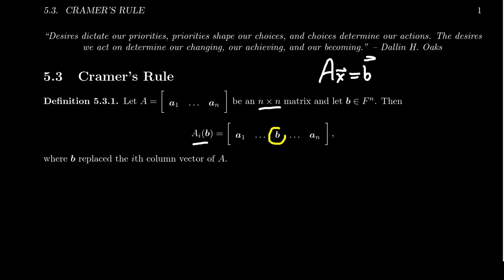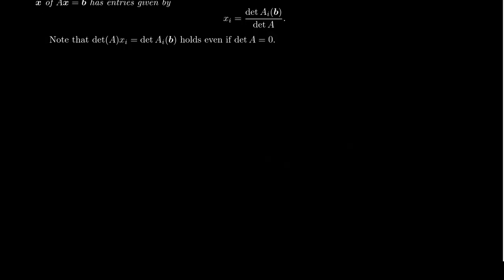In the i-th column of A, we're going to replace the i-th column with this vector b. Everything else is identical. This is what we mean by this matrix A_i(b). I can't say I'm in love with the notation, but it gets the point across and it's really only used in this section.